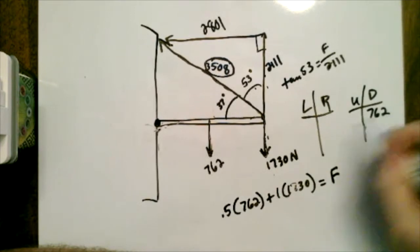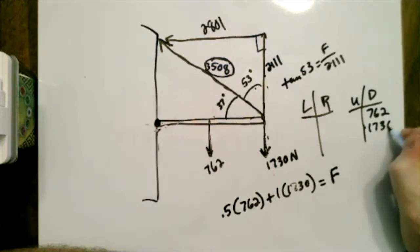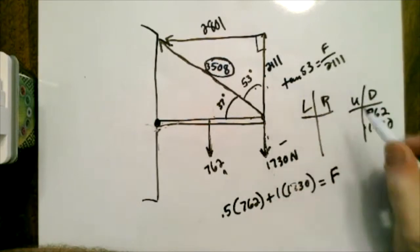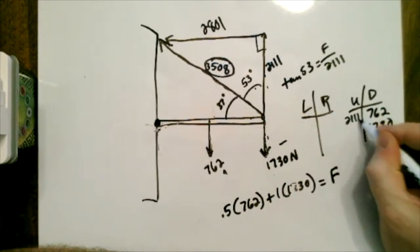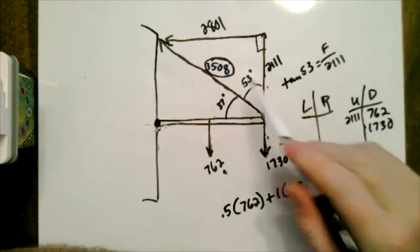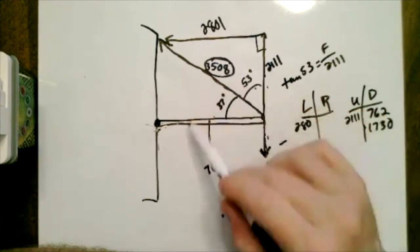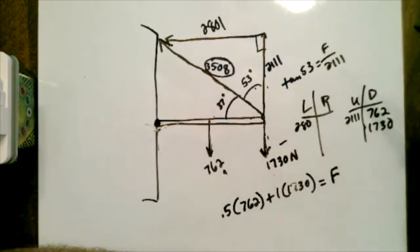So for down, I have 762 and I have 1730, right here and here. And up I have 2111. And then for lefts and rights, for left up here I have 2801, and there are no right forces here.